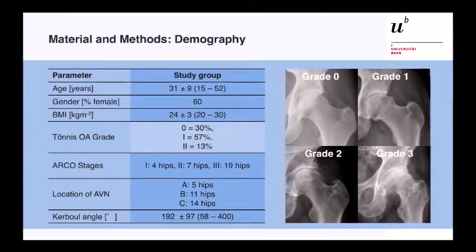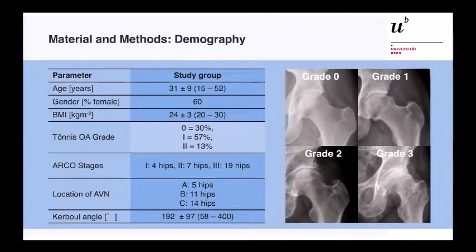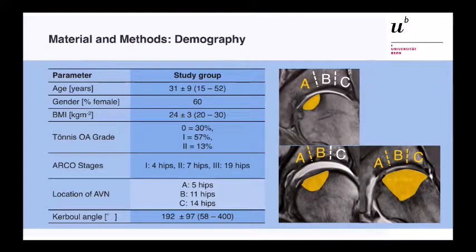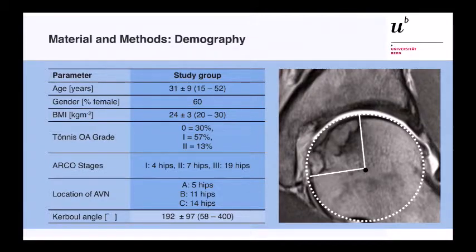The demographics show a younger patient population, most of whom were female. The Tannus grade varied: one-third were Tannus grade one, half were Tannus grade one, and 13% were already Tannus grade two. The ARCO stages included several hips at grade one, seven hips at grade two, and 19 hips at grade three. The location of the AVN was on the medial portion of the sclerotic zone in five hips, the mid zone in 11 hips, and extending to the lateral portion in 14 hips. The curveball angle in the sagittal and coronal planes combined was 192 degrees.